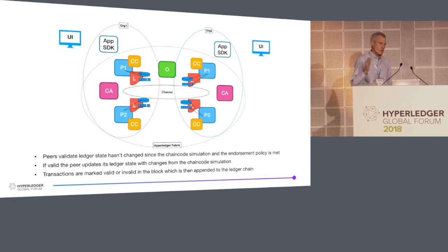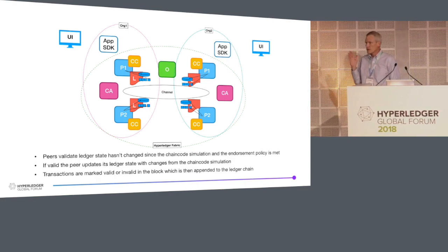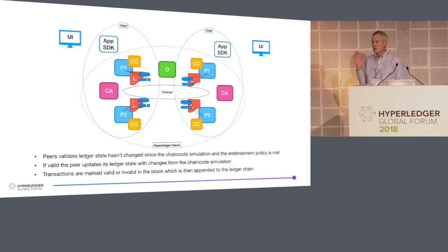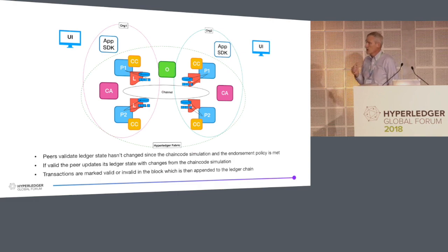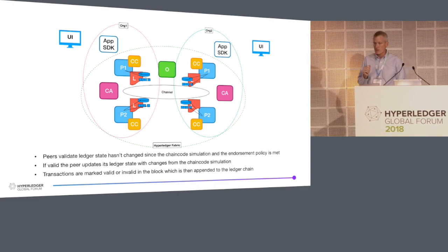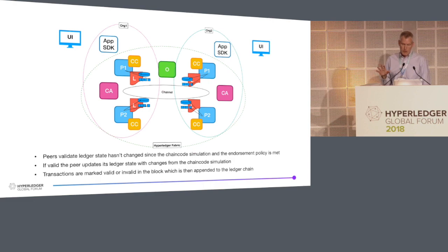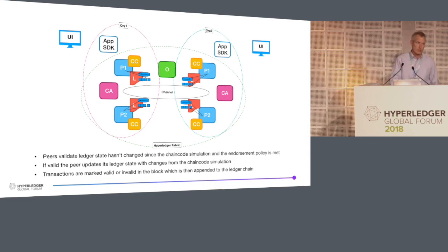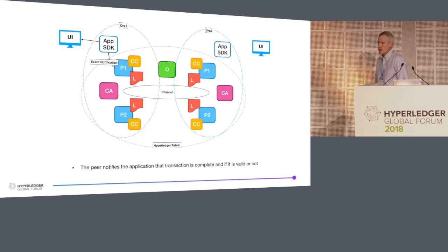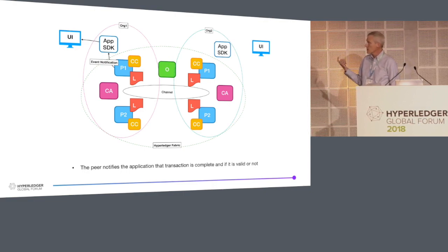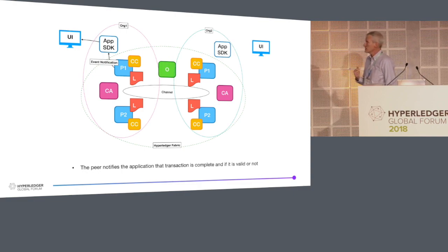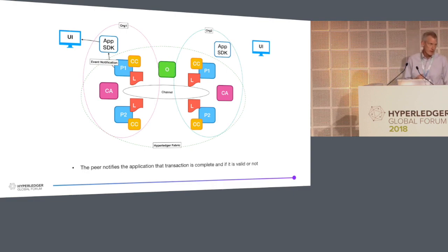The peers will go through each of these transactions one by one. If they're valid, they'll update the world state and mark it as valid. If not, or if there's some conflict, the transaction will be marked invalid. Whether the transaction is valid or not, it stays in the block. Once all that's been checked, the block will be appended to the blockchain. That's an asynchronous process — it may take a couple of seconds. The application can register with the SDK for an event to be notified when the transaction has been completed, and that event will also notify the application whether the transaction was successful or not.